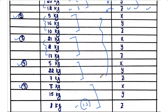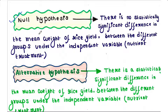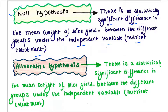To do this we use the one-way ANOVA technique. The null hypothesis is: there is no statistically significant difference in the mean rice yield between the different groups under the independent variable, that is the nutrient treatment. The alternative hypothesis is: there is a statistically significant difference in the mean rice yield between the different groups under the independent variable, that is the nutrient treatment.